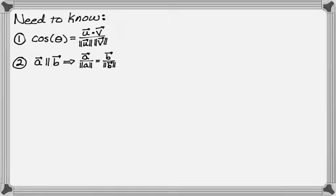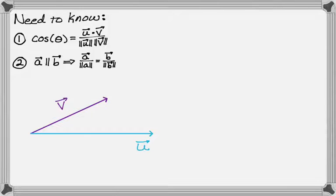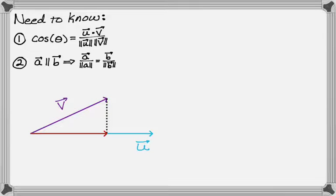So let's get started. We want to find the projection. Let's say we have vector v and vector u, and I'm going to project v onto u. To do that, you kind of drop an altitude there, creating a right triangle that has vector v as its hypotenuse. The projection is the vector that runs along u and creates that right triangle — this right here is the projection.